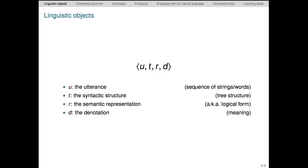Let's begin by reviewing the core concepts from linguistics that we'll depend on throughout the lecture. Broadly speaking, we view linguistic objects as four tuples, consisting of an utterance U, its syntactic structure T, a semantic representation for that structure R, and finally the denotation D, which is the interpretation of the semantic representation R.